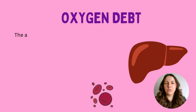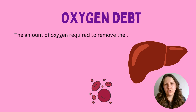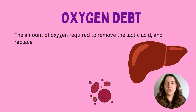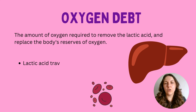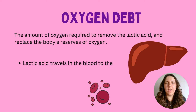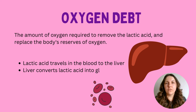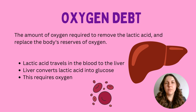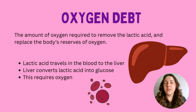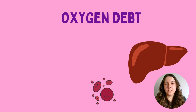For higher tier students, you'll need to know about oxygen debt — essentially the amount of oxygen required to remove lactic acid and replace the body's oxygen reserves. During prolonged exercise, the body needs oxygen to break down the lactic acid that has built up through anaerobic respiration. Lactic acid travels in the blood to the liver, where it is broken back down into glucose. The oxygen is needed to complete this process and reduce muscle fatigue.